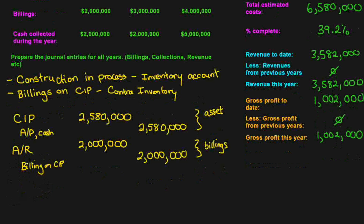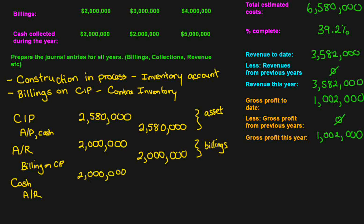Next is collections. We collected $2,000,000 of the $2,000,000 billed, which is great. We debit Cash and credit Accounts Receivable for $2,000,000. That one should be pretty straightforward — it's just a typical collection entry.